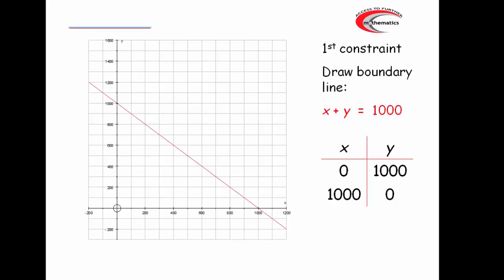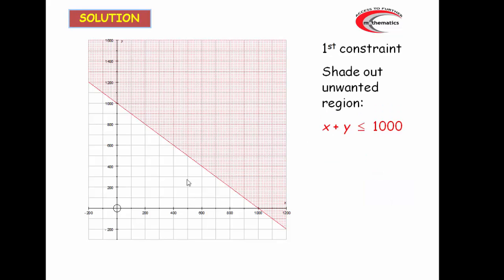Right, so we want our three constraint inequalities. The first one, the syrup one, x plus y is less than or equal to 1000. So draw the line x plus y equals 1000. Usual method, x is 0, y is 0. When x is 0, y is 1000. When y is 0, x is 1000. So we have 1000, 0, and 0, 1000. Draw the line through those. And shade the bit we don't want. Well, use the origin, it's not on the line. 0 plus 0 is less than 1000. So we shade off the bit we don't want, the bit above.